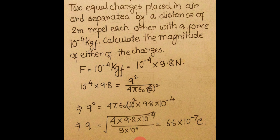Problem 1: Two equal charges are placed in air and separated by 2 meters, and they repel each other. Since they repel, both charges are of the same nature — either both positive or both negative — with a force of 10^-4 kilogram-force (kgf). Kilogram-force is a gravitational unit; we convert it to absolute units by multiplying by the acceleration due to gravity, g. We have to calculate the magnitude of either charge.